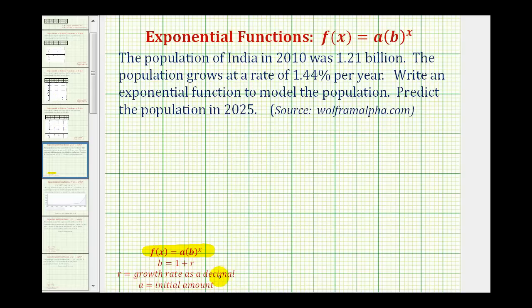r is the growth rate expressed as a decimal, a is equal to the initial amount, or in this case, the initial population, and because our function will be in terms of time, the exponent x would be the number of years after the base year.